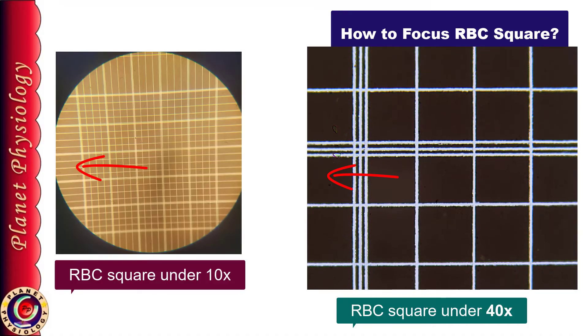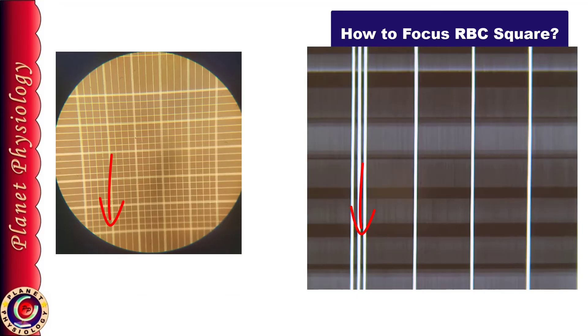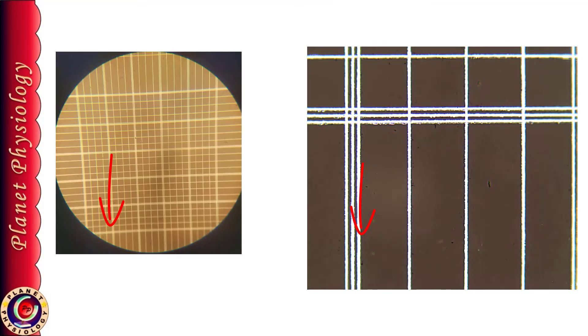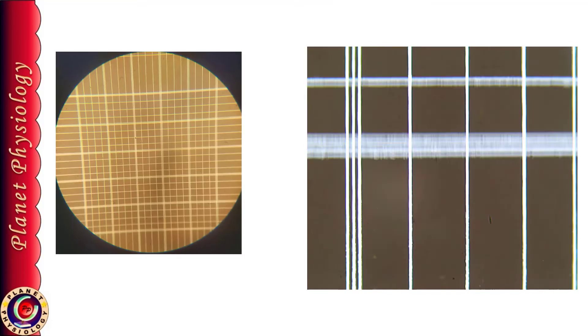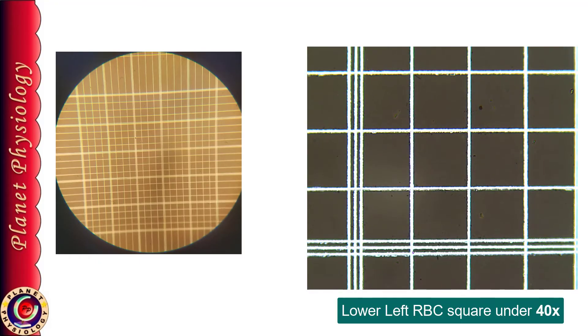So now I am moving downwards. I am getting squares, squares and now I am getting only the vertical lines. This makes sure that I am in lower RBC square.